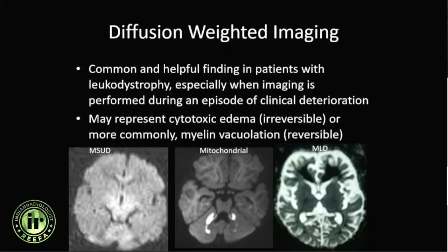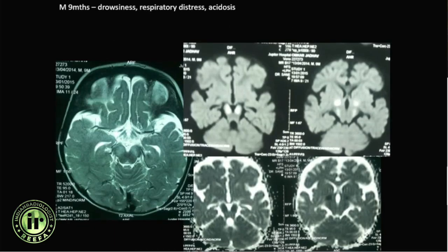Apart from conventional imaging, diffusion-weighted imaging plays a role in leukodystrophies, especially when imaging is performed during an episode of clinical deterioration. This may represent cytotoxic edema, which may be irreversible. However, not everything that is restricted on diffusion is irreversible — sometimes it can be reversed due to myelin vacuolation. A nine-month-old with drowsiness and respiratory distress showed signal abnormality in the brainstem with restricted diffusion.